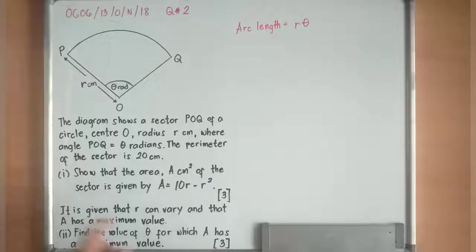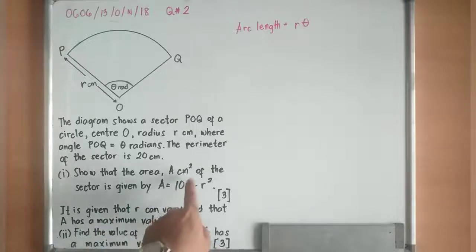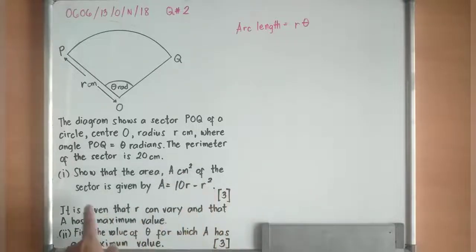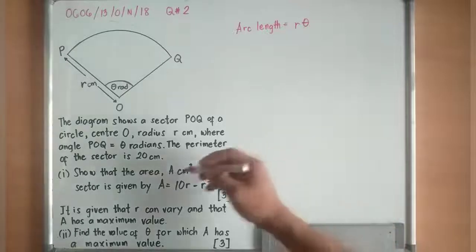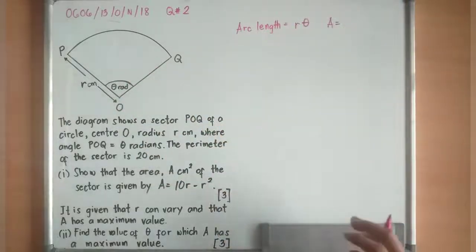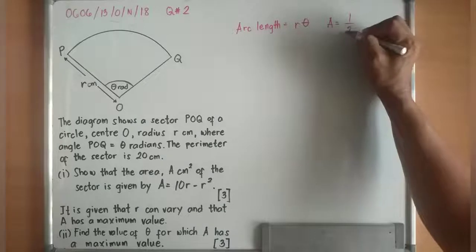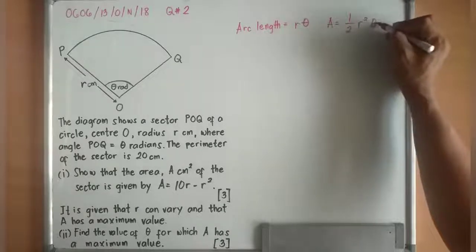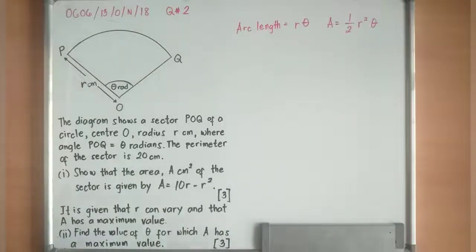Number one, show that the area A in cm² of the sector is given by A equals 10R minus R squared. We have to work out to show area. Area of a sector is always equivalent to one half R squared theta. After finding the value of theta, we can express the area in terms of R.